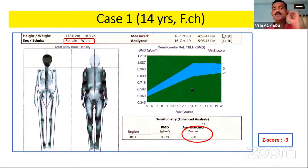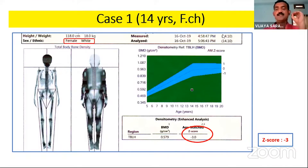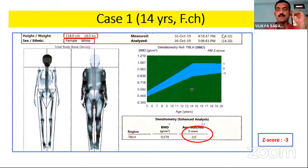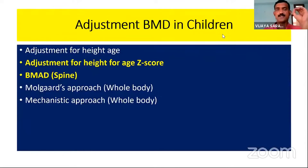To illustrate BMD adjustment in short children, consider a 14-year-old girl with growth hormone deficiency presenting for both growth hormone treatment and bone health assessment. Her total body less head BMD Z-score was minus 3 — clearly low bone mass since anything less than minus 2 is considered low. Similarly, her lumbar spine Z-score was minus 3.9, much lower than normal. So how do we adjust BMD for height in these children?